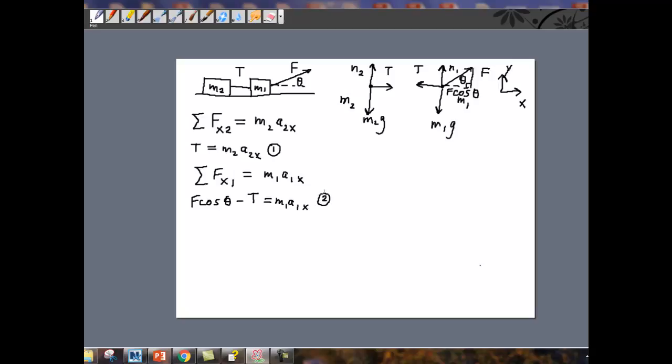Now for the purpose of this problem, F and theta and the masses are all considered given quantities. So they can appear in our answers. But let me look at the equations here and count equations and unknowns. I've got two equations, but I have A1X as an unknown, A2X as an unknown, and T as an unknown. So I have three unknowns, but only two equations. And that's why I need one more equation. And you've probably guessed what this should be.